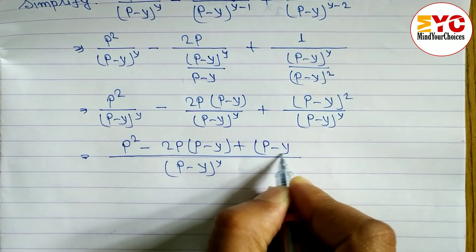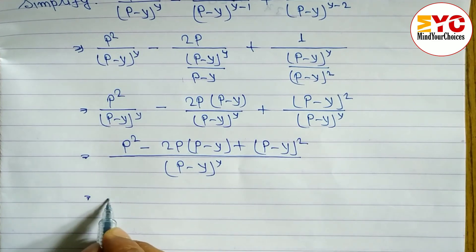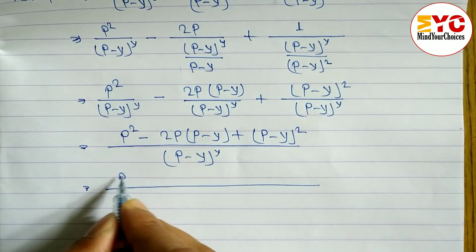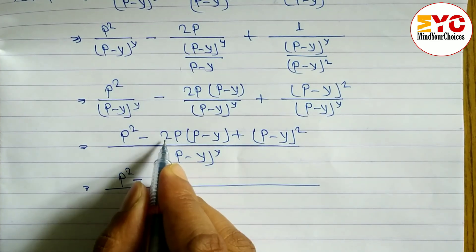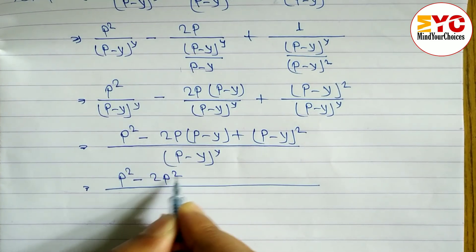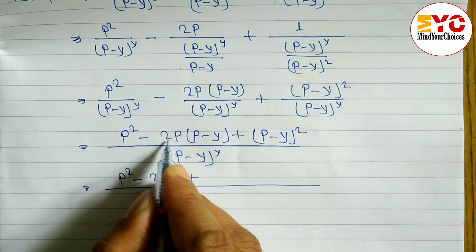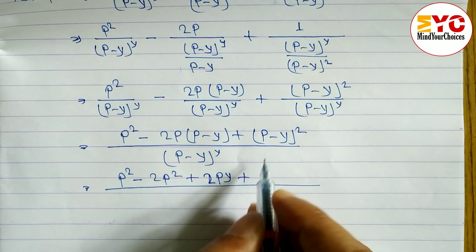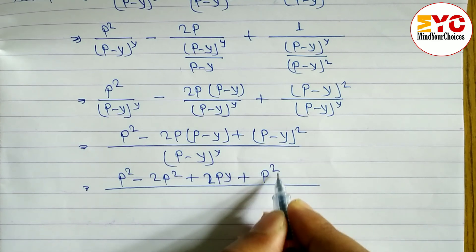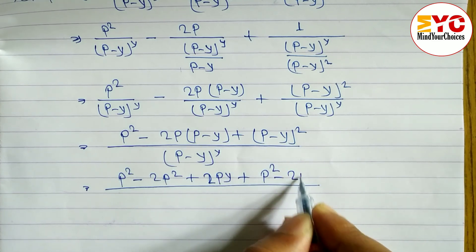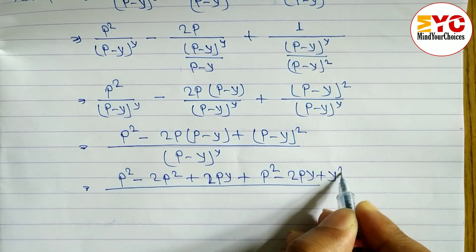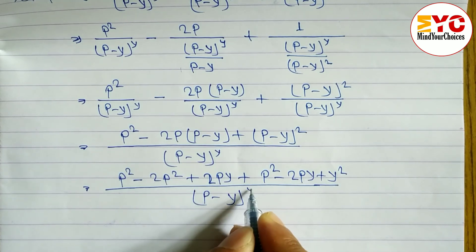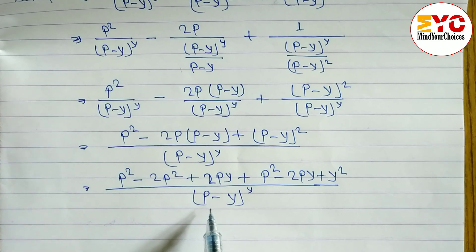Now we open the brackets. p² − 2p·p gives −2p² + 2py. Then we apply the formula (a−b)² = a² − 2ab + b², giving p² − 2py + y². Write the denominator (p−y)^y below.